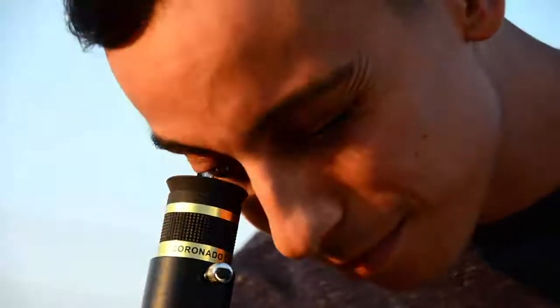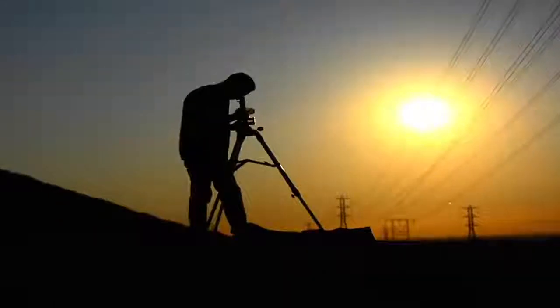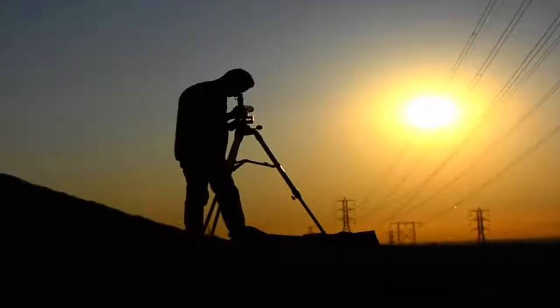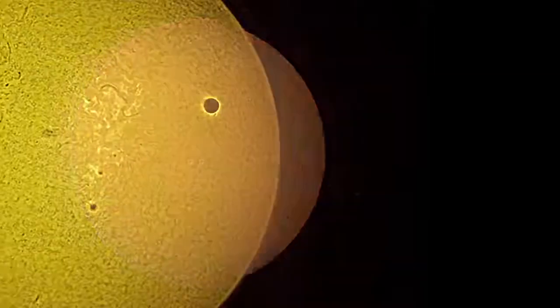The PST will show you dynamic, ever-changing prominences at the edge of the Sun, as well as the filaments and other surface details, in amazing quality. All in the brilliant and distinctive red color of hydrogen alpha light.